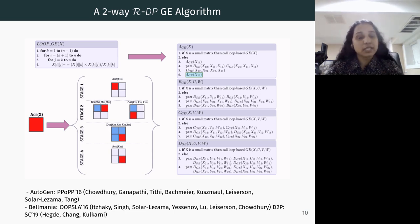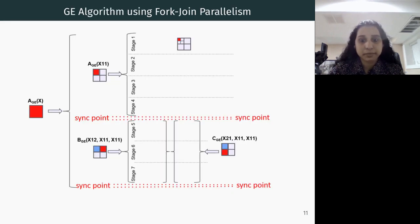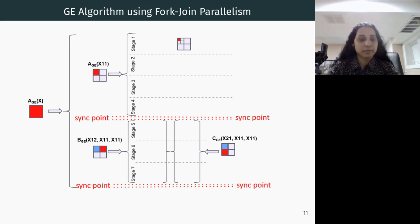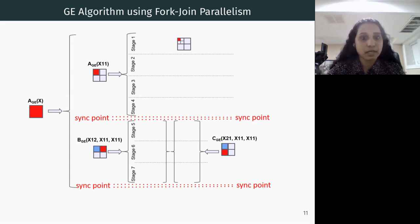To implement these recursive dynamic programming algorithms, people typically use fork-join models like CILK and OpenMP. Here is the same Gaussian elimination without pivoting implemented using the fork-join model. Fork-join models have a structural property that limits parallelism in these recursive algorithms.